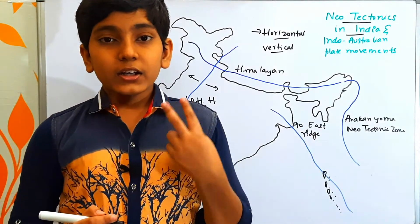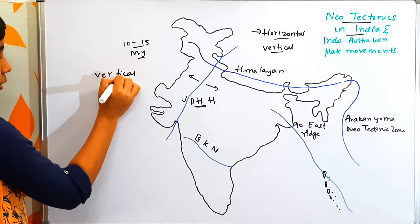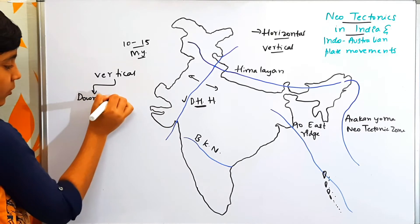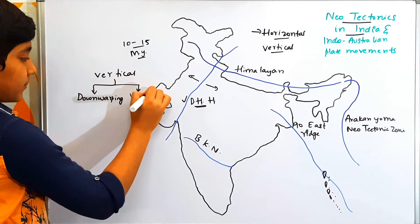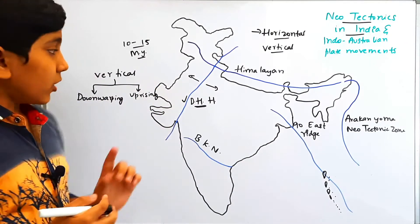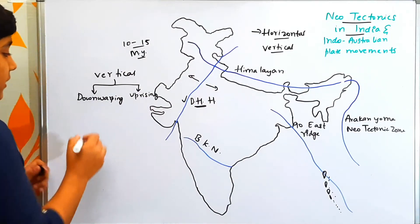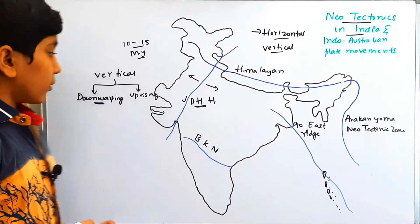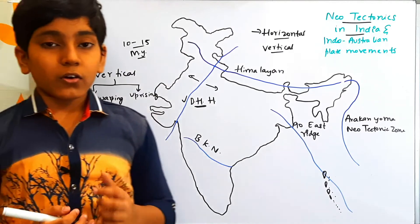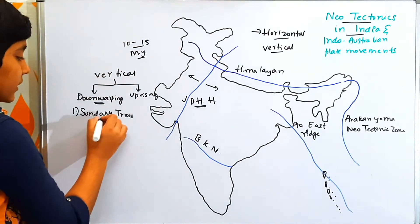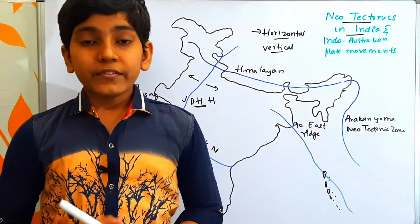Next, in the vertical movement, there are two movements of the Indian plate. One is down-warping of East India, and the other is upraising of West India. Down-warping means East India goes down, while upraising means West India comes up. In down-warping, examples include the Sundari trees — trees that grow in the regions of the Sundarbans Delta and belong to the Mangrove Forest type. These Sundari trees can be found at 150 meters below sea level, indicating that the eastern part of India is going down.